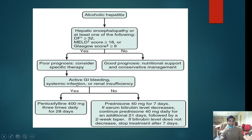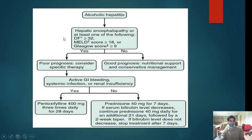Whenever the discrimination factor is greater than 32, it is an indication to start the patient on steroids to reduce inflammation. If the patient has no active GI bleed, start prednisolone 40 mg for 7 days; if bilirubin decreases, continue 40 mg for another 21 days — total one month. If the patient has active GI bleed, renal failure, hepatorenal syndrome, or SBP, you do not give steroids — instead give pentoxifylline, a TNF-alpha inhibitor, 400 mg three times daily for 28 days.